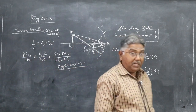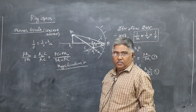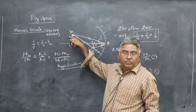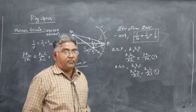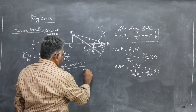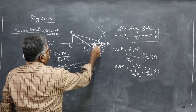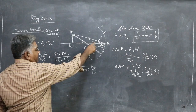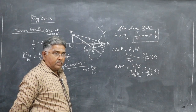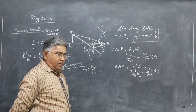Here we are taking up linear magnification — specifically lateral magnification. We are not considering angular magnification or longitudinal magnification here, only lateral magnification. The definition of magnification is: m = h₂ / h₁, where h₂ is the image size (A₂B₂) and h₁ is the object size (A₁B₁). It is defined as the ratio of image size to object size.